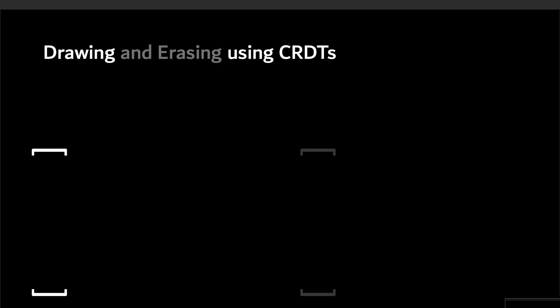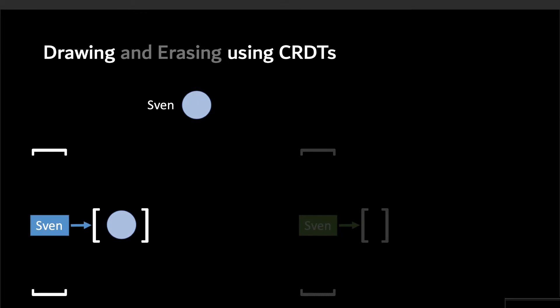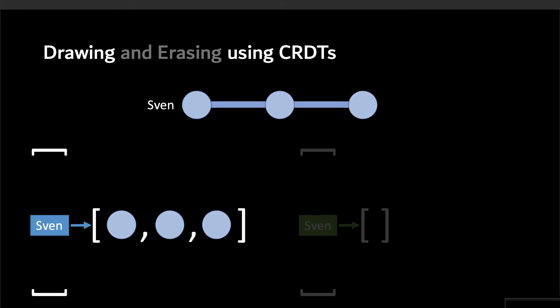For drawing, this is very simple — let's think about just a simple stroke. While drawing, you're just adding points to it, so we can implement this as an append-only list of points. But for erasing, we didn't want to be limited to just the initial set of points we drew.